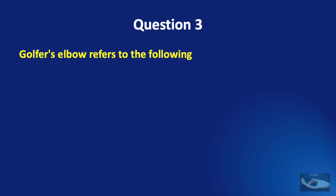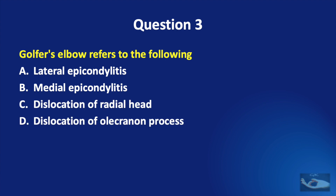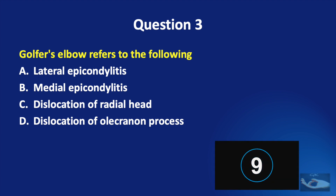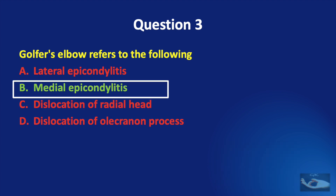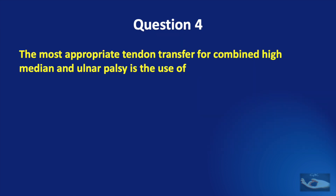Question number 3. Golfer's elbow refers to the following: lateral epicondylitis, medial epicondylitis, dislocation of the radial head, or dislocation of the olecranon process? The correct answer is medial epicondylitis. Medial epicondylitis is called golfer's elbow because in making a golf swing, the common flexor origin tendon is stressed.